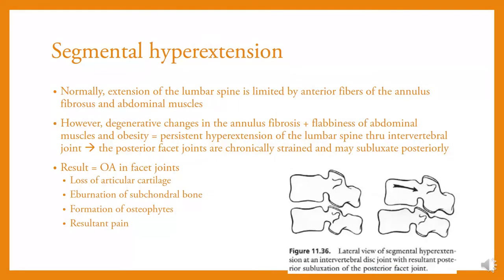Segmental hyperextension: normally, extension of the lumbar spine is limited by anterior fibers of the annulus fibrosus and abdominal muscles. However, degenerative changes in the annulus fibrosus combined with flabbiness of the abdominal muscles and obesity result in persistent hyperextension of the lumbar spine through the intervertebral joint. The result is OA in the facet joints, with loss of articular cartilage, eburnation of subchondral bone, formation of osteophytes, and resultant pain.